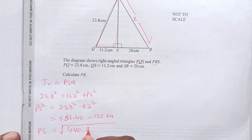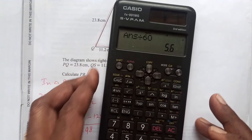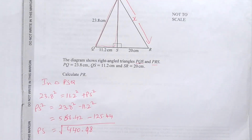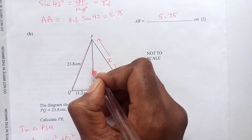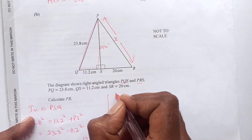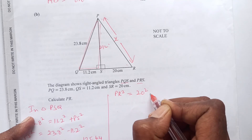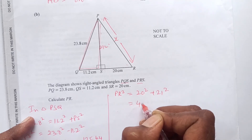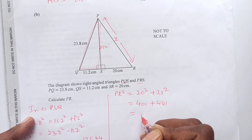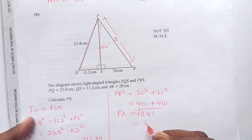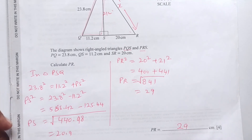The square root of 440.98 is approximately 20.9, which we can approximate to 21 cm. Now for PR, using Pythagoras in triangle PRS: PR² = PS² + SR² = 21² + 20² = 441 + 400 = 841. So PR = √841 = 29 centimetres.